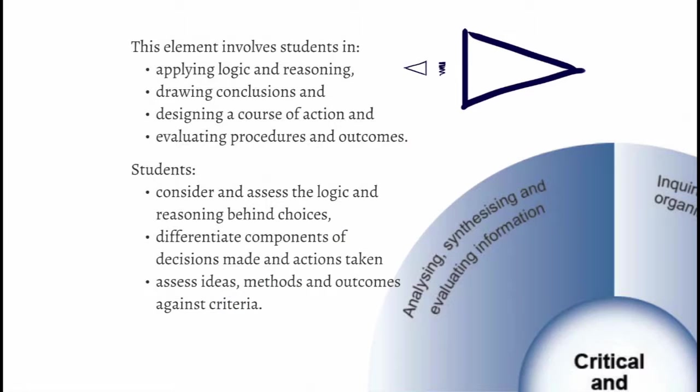The critical thinking is a filter, but the creative thinking — the generative thinking — and then the critical thinking provides the weighing. So if we go back to the general capability, one of the four quadrants of critical and creative thinking is about analysing, synthesising and evaluating information. This element involves students applying logic and reasoning, drawing conclusions, evaluating, and considering and assessing the reasons behind choices, assessing ideas and methods. In this particular quadrant there's a lot of convergent thinking.